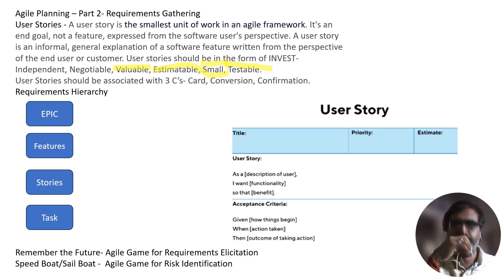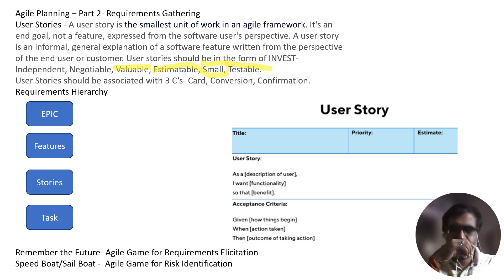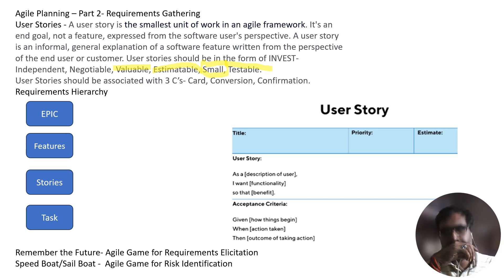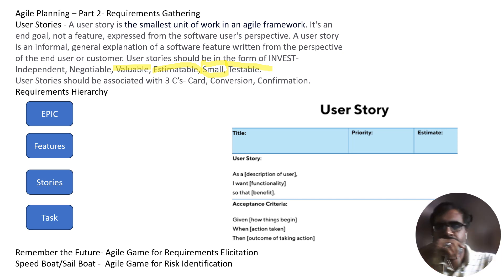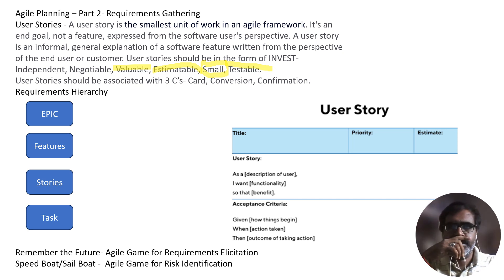User stories also have three C's associated with them. The first C is Card, the second C is Conversation, and the third is Confirmation. Card means requirements written on a card. Conversation means details captured in conversation. Confirmation means acceptance criteria confirm that the story is done.